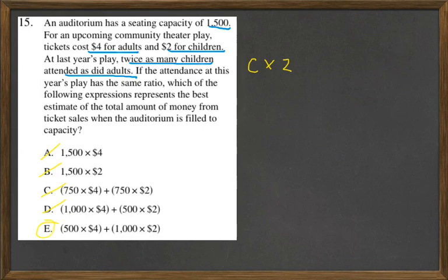That leaves us E: 500 seats at the adult price, and then 1,000, which is double 500, at the children's price of $2.